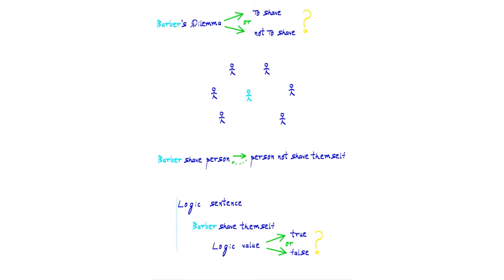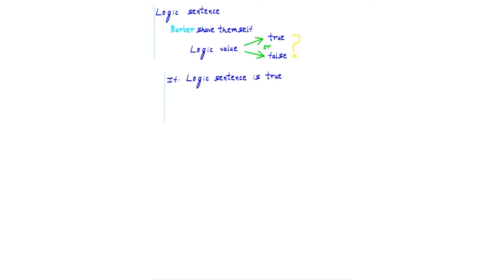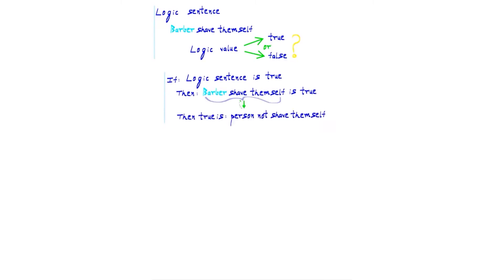If the sentence is given true value, then 'the barber shaves themselves' is true. Then according to the condition, the person being shaved shall not be shaving themselves. The person here is the barber. So then true is that the barber has not shaved themselves. So: if the sentence is given true value, then we conclude that the barber is not shaving — so the sentence is false.